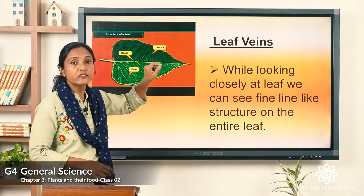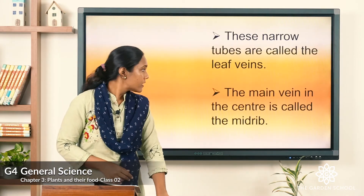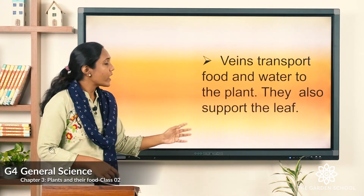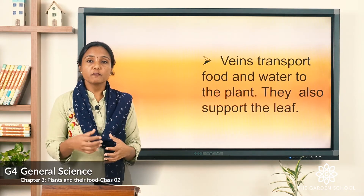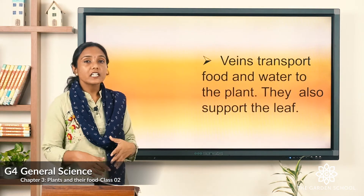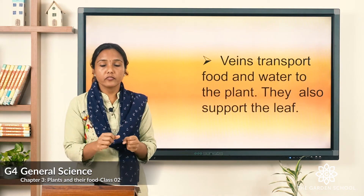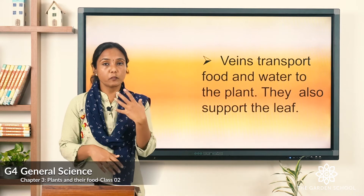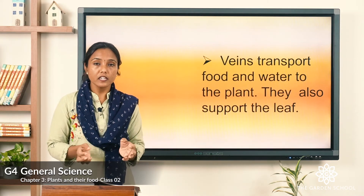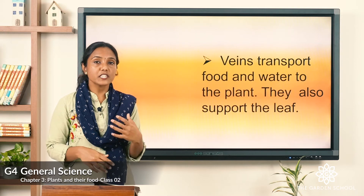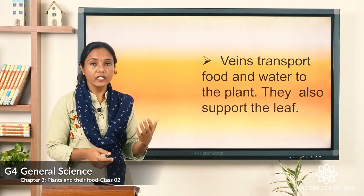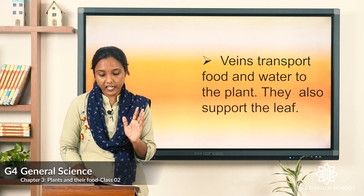The main vein in the center is called the midrib. Veins transport food and water to the plant and also support the leaf. Their main activity is to pass food and water to other parts of the plant, as well as to support the leaf.